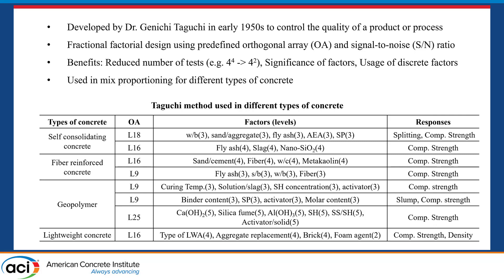The biggest benefit of the Taguchi method is to reduce the total number of tests. For example, if there are four factors with four different levels, the total number of combinations is 256. However, using the Taguchi method, the number of tests can be reduced to 16 using the L16 orthogonal array. Moreover, we can confirm the order of significance of factors on a response using ANOVA. The Taguchi method has been used in different types of concrete for mix proportioning.